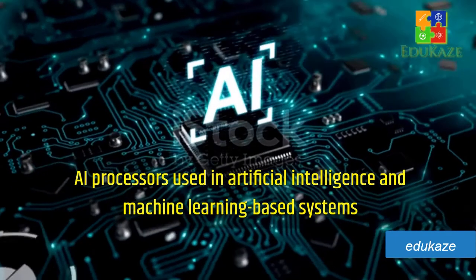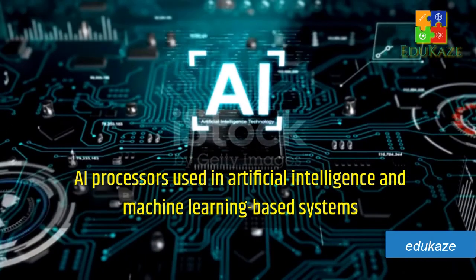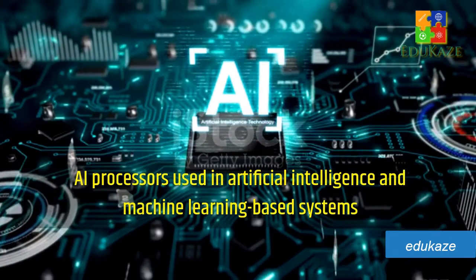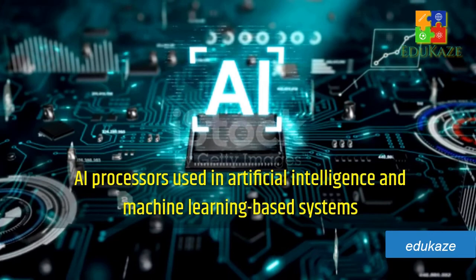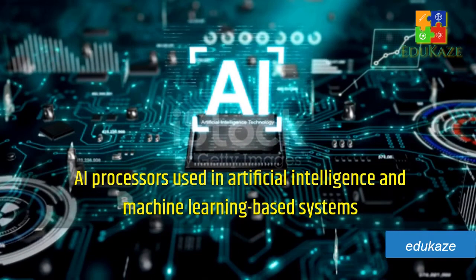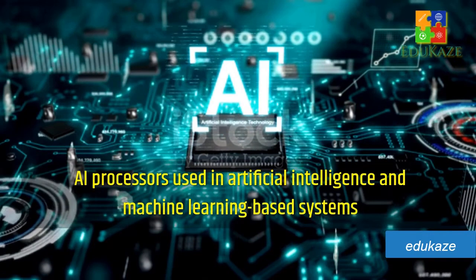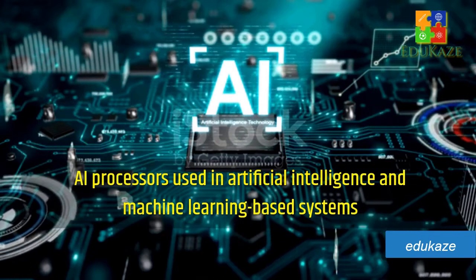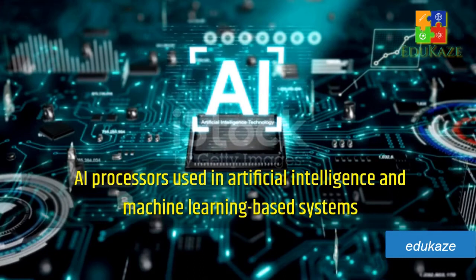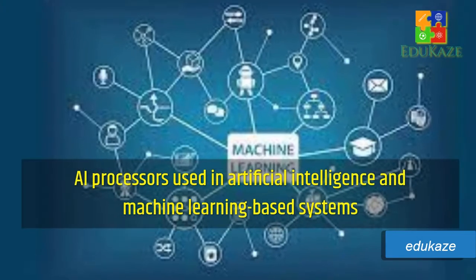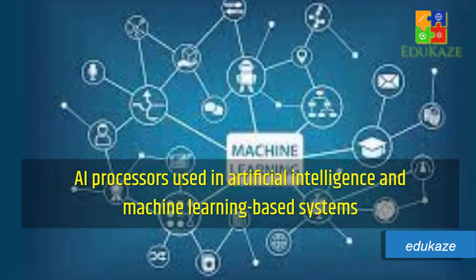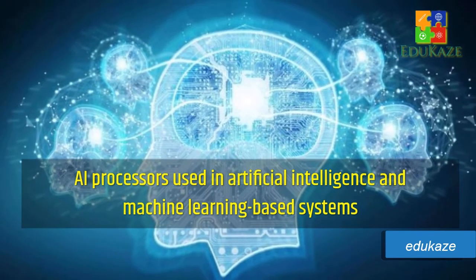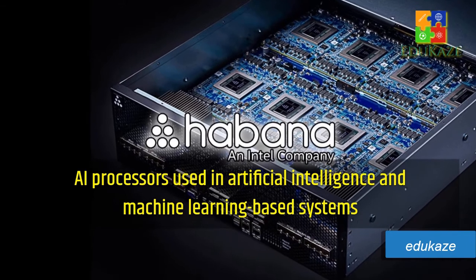The processors used in artificial intelligence and machine learning-based systems are known as AI processors. These are basically the neuromorphic processing units, which are designed on the basis of machine learning and artificial neural networks. These processors are fast and able to read human behavioral conditions and do computation on the basis of it. One example of this kind of processor is Intel Habana.